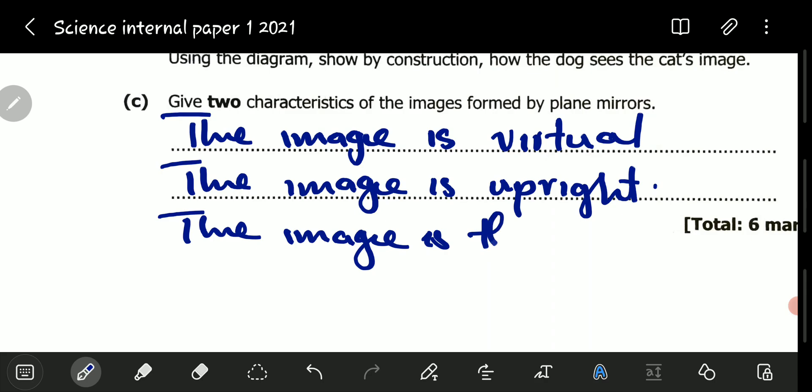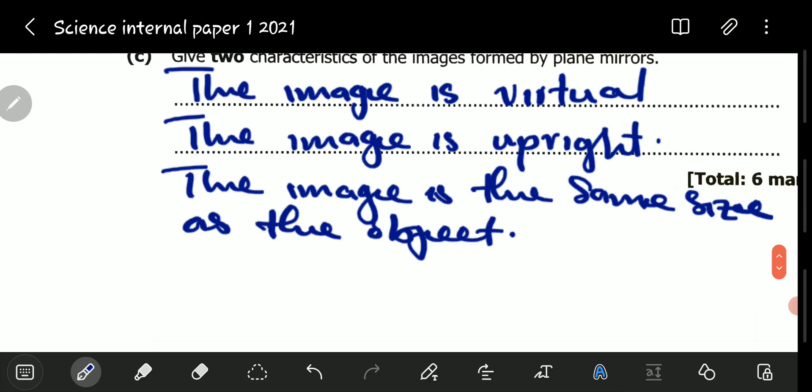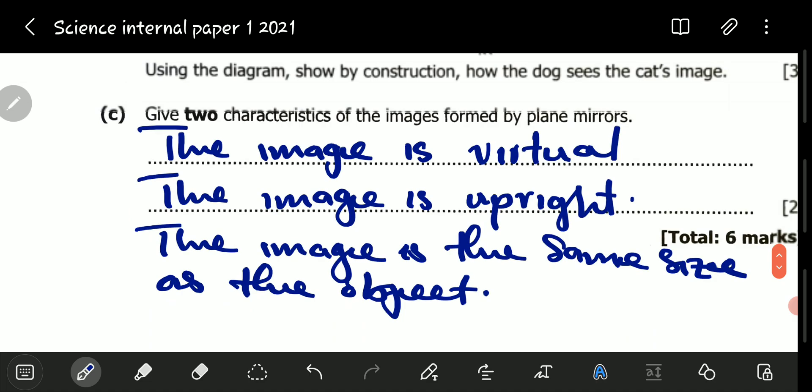The image is the same size as the object. Then we also have the image is laterally inverted. There are so many, we can continue and go on and on.